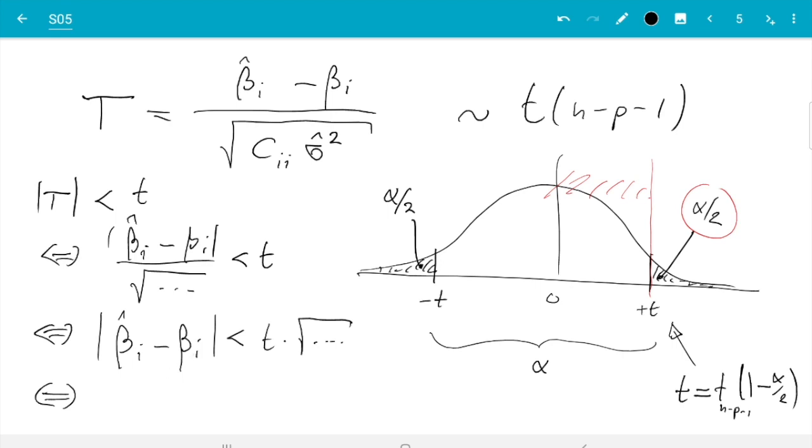We want beta on the left hand side. So beta must be in the interval beta hat i minus t times square root up to beta hat i plus t times square root. That's all the places where beta i could have been, so that the distance between beta hat and beta i is less than t times the square root. That's the confidence interval.